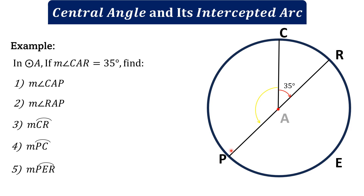Angle CAP is a central angle because its vertex is at the center. Notice that this chord is a diameter because it passes through the center. A diameter divides a circle into two equal parts — two semicircles. Angle CAP and angle CAR are adjacent angles.